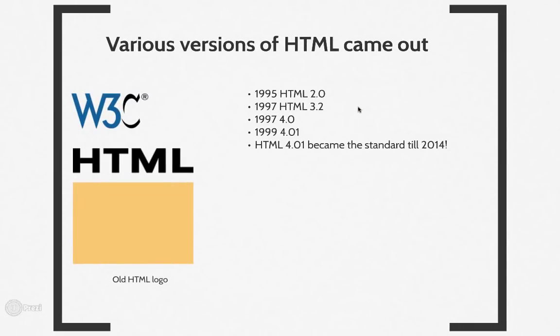Around the same time, a different group inside W3C was standardizing HTML. They came up with various versions of HTML between 1995 and 1999. In 1999, they settled on HTML 4.01, which became the standard all the way until 2014, when HTML5 came out.